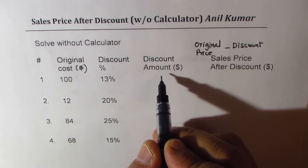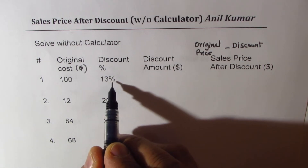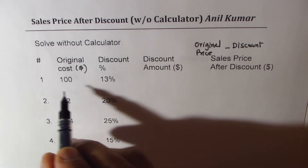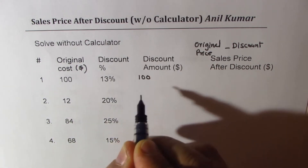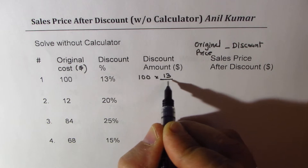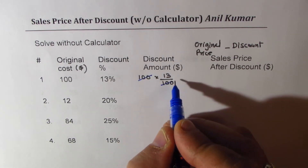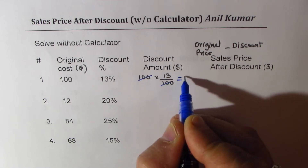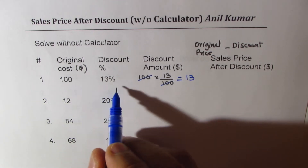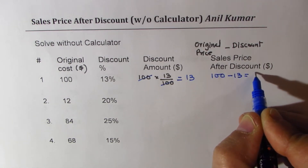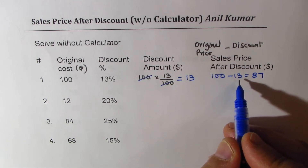When we talk about discount using percentages, 13% means 13 out of 100. A discount of 13% on $100 is: 100 times 13 over 100. You simplify by dividing numerator by denominator and get a discount amount of 13. Therefore what you pay is 100 minus 13, which is 87. First take away 10 to get 90, then take away 3 to get 87.